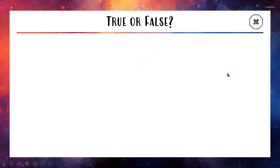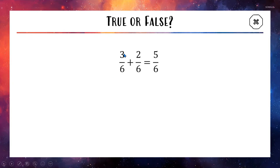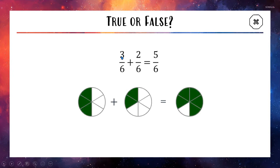Let's try another question: 3 out of 6 plus 2 out of 6 equals 5 out of 6. Now 3 out of 6 is 1 half and 2 out of 6 is 1 third from before. Does this make more sense? 3 plus 2 is 5 and the 6s stay the same — and that is true. Looking at the picture: here we have 3 out of 6, and here we have 2 out of 6. If we put these two green pieces together we get 5 out of 6, so the statement is true.